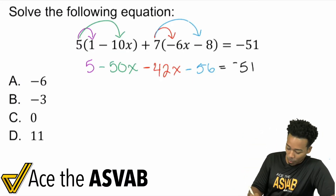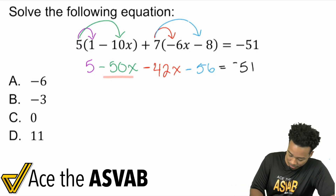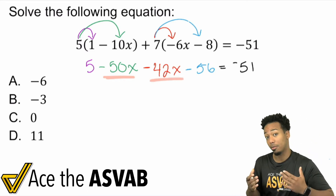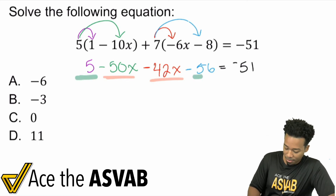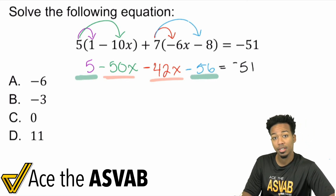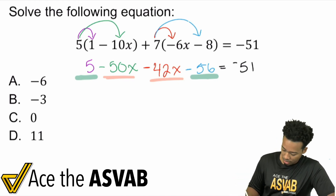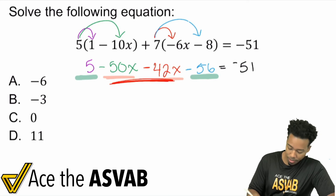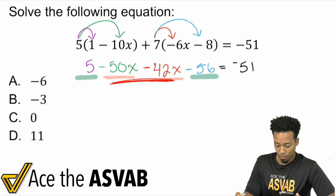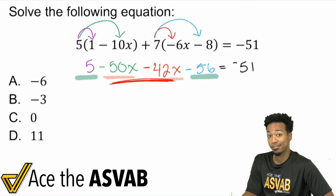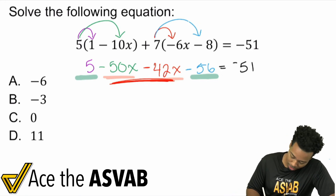Here we're going to combine like terms. We have negative 50X and negative 42X — those are like terms because they have the same variable and the same exponent. They're both negative, so you're basically just adding and staying negative: 50 and 42 becomes 92, giving us negative 92X.